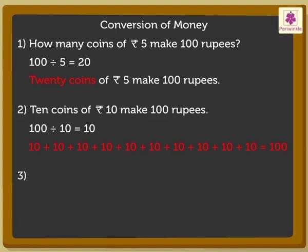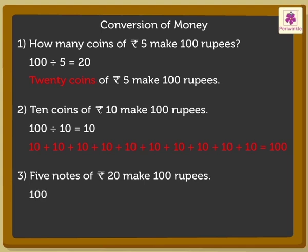5 notes of 20 rupees make 100 rupees. Here, 100 divided by 20 is equal to 5.